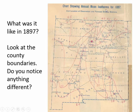This is actually the mean isotherms — isotherms meaning the same temperature — so along those lines is constant temperatures for 1897. The map is quite a bit different from the current map, so you have to do a little study to figure out where things are. Some of them are the same; some might have changed over time.